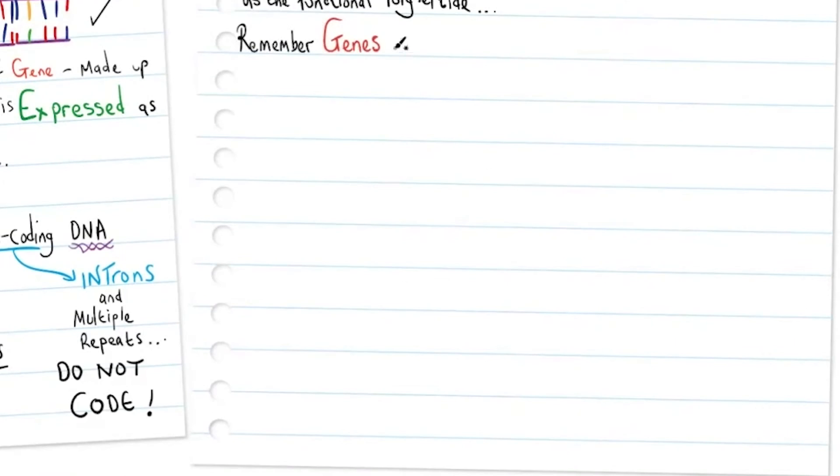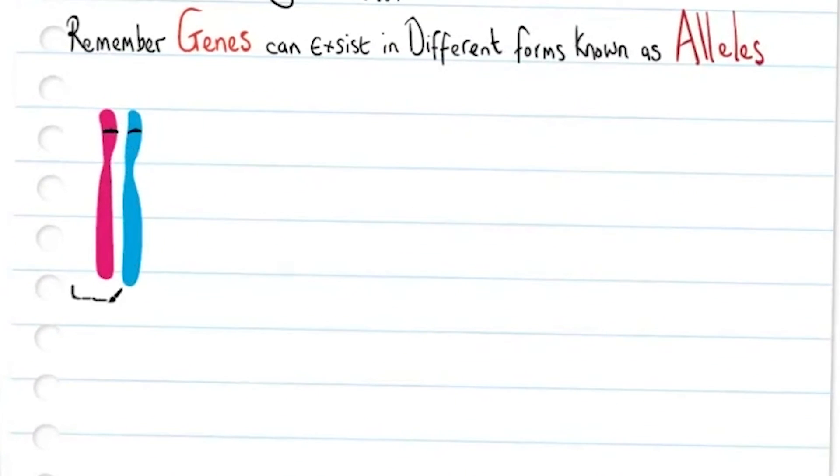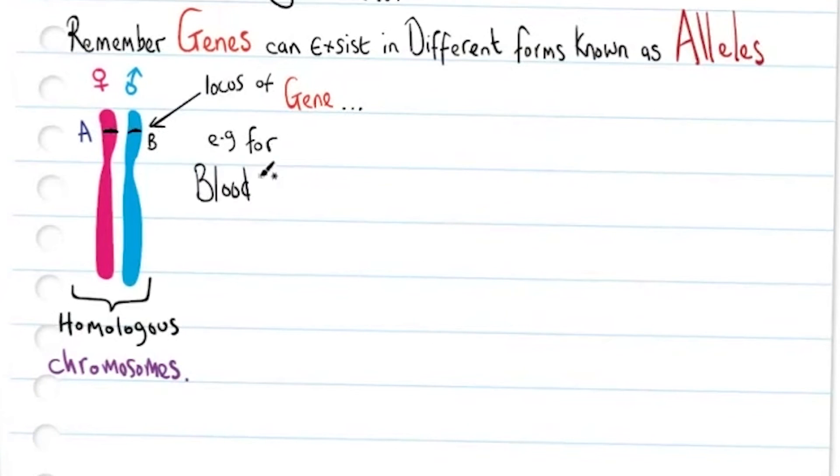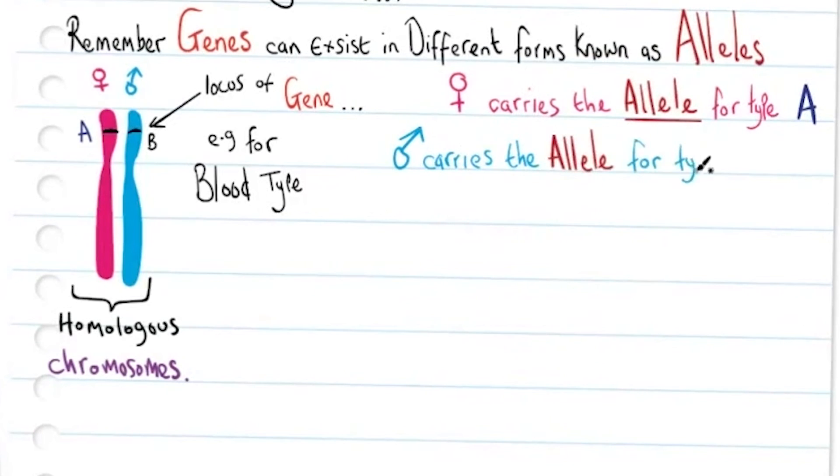Remember genes can exist in different forms known as alleles. Your homologous chromosomes inherit one chromosome from the father and one from the mother. These two together are homologous and both contain the locus of a particular gene, for example the gene for blood type. The maternal chromosome carries the allele for blood type A while the paternal carries the allele for blood type B.